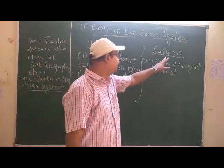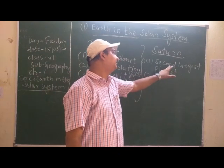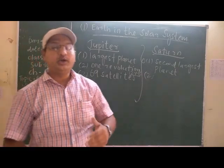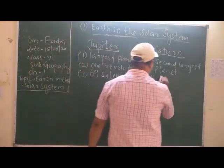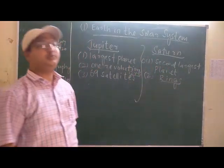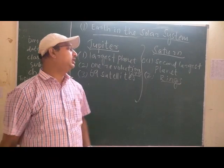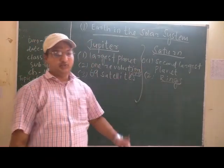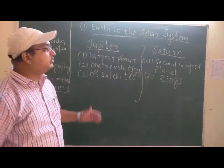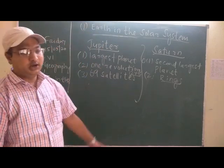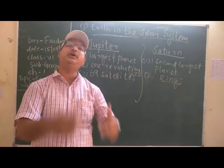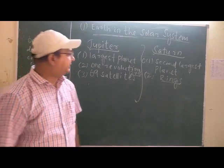Saturn is the second largest planet in the solar system, and it is surrounded by rings. In the picture of the solar system, you can see there is a ring around the planet Saturn. The rings are composed of innumerable small particles — that can be rocks, that can be dust particles — and they have an independent orbit around the planet Saturn.